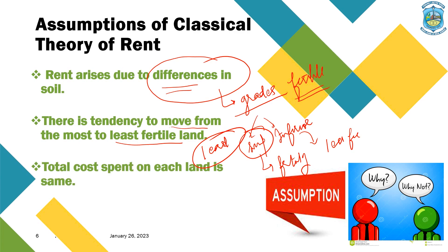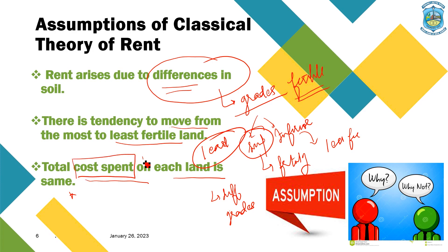The next assumption is that the total cost spent on each land is the same. Even though there are different grades of land — A, B, C, D — the total amount spent on each grade will always be the same, say one thousand rupees each, irrespective of their fertility.